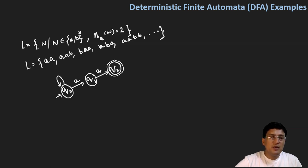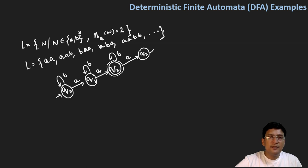If I get any B initially, that should not be a concern because we are not restricting the number of B's. If I get some B after the first A, that is also not a matter of concern. If I get some B's after the second A, that is also not a concern. But if I get an A after the second A, that is a matter of concern, and this will move to the dead state. In the dead state, if you get A or B, you should remain at the dead state.